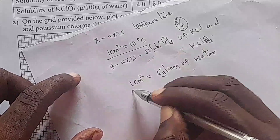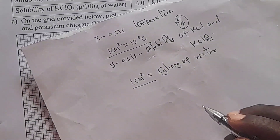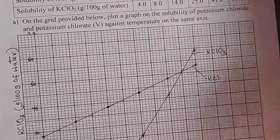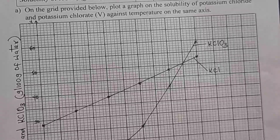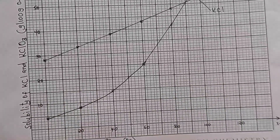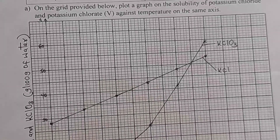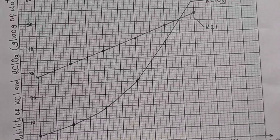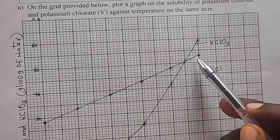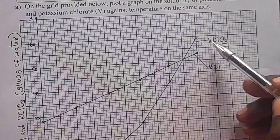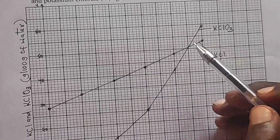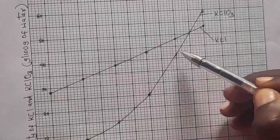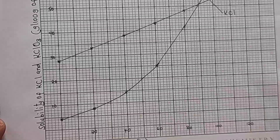Try using these scales to draw your own graphs and compare with the graph I've drawn. On the y-axis we have solubility of potassium chloride and potassium chloride 5 in grams per 100 grams of water, and on the x-axis we have temperature in degrees Celsius. There are two curves; we have to label them. One curve is for potassium chloride and the other going higher is for potassium chloride 5. I have plotted the points for both curves.